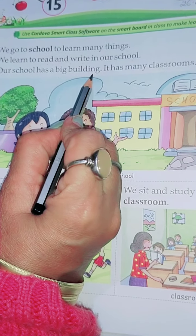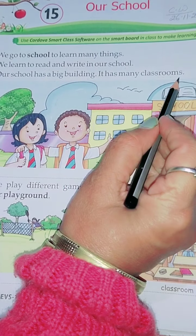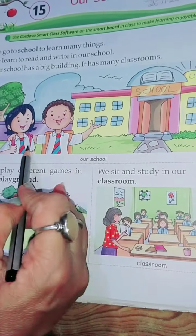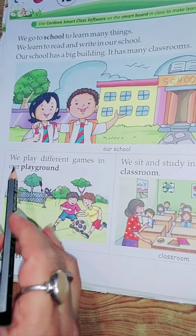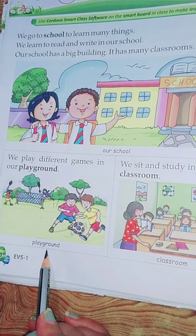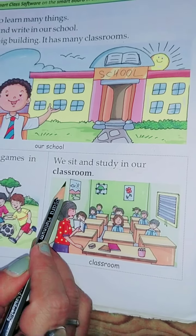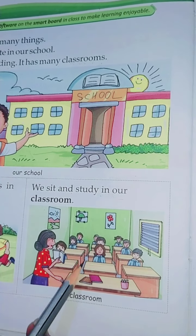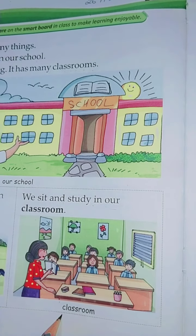Our school has a big building with many classrooms. You can see in the picture — this is the building of the school. We play different games in our playground. Then we sit and study in our classroom, where all the tables — teacher's table and your tables — are there.